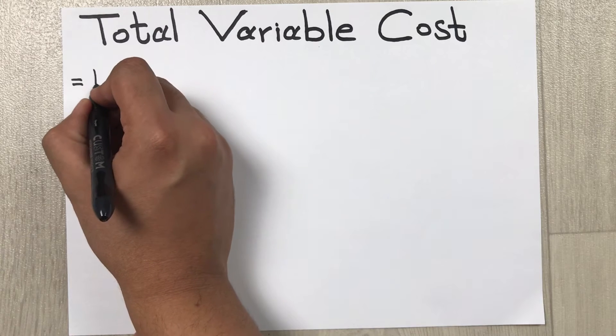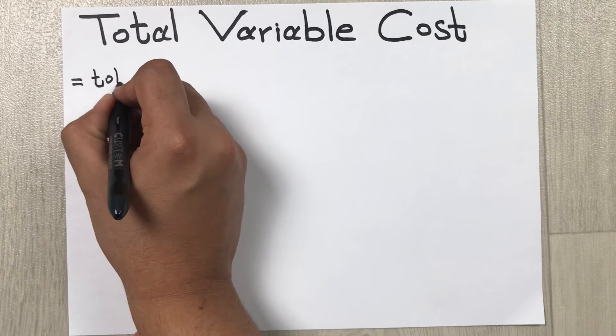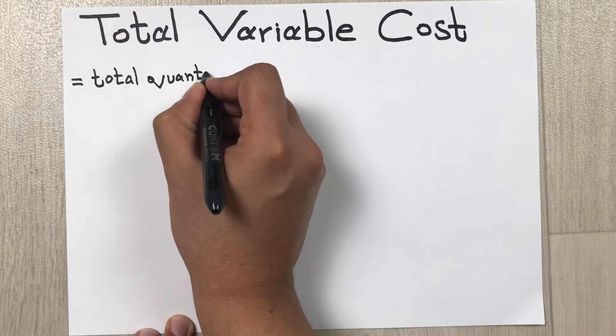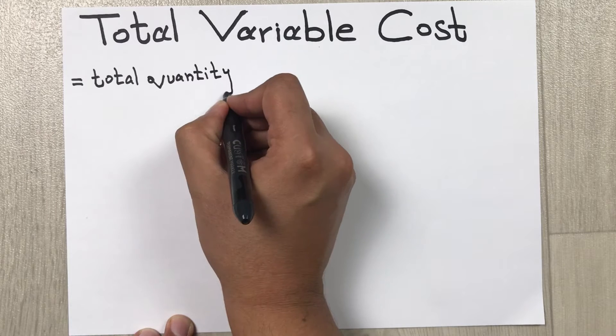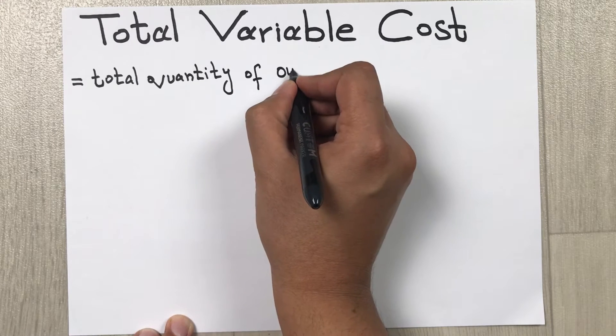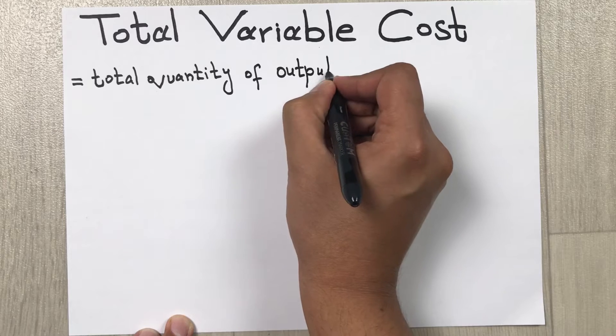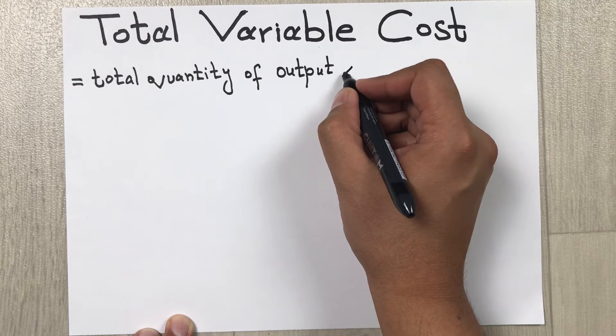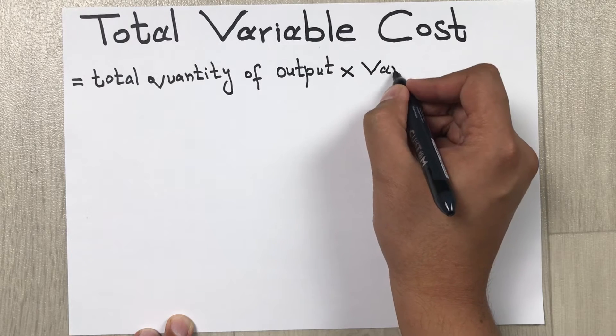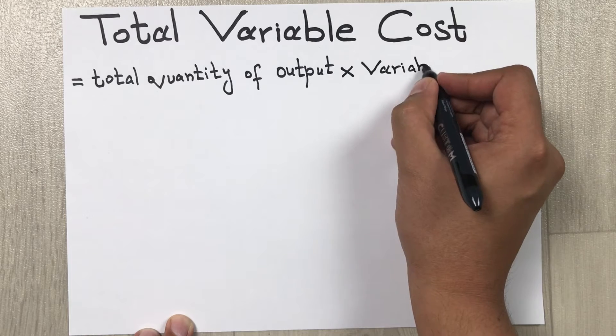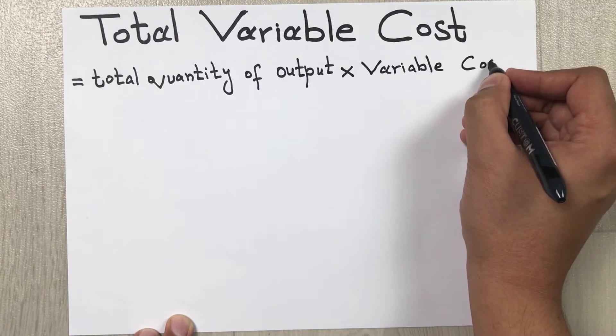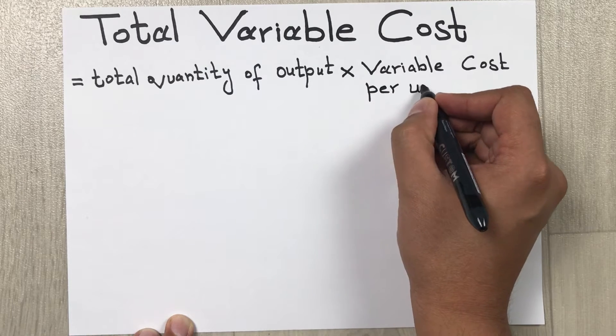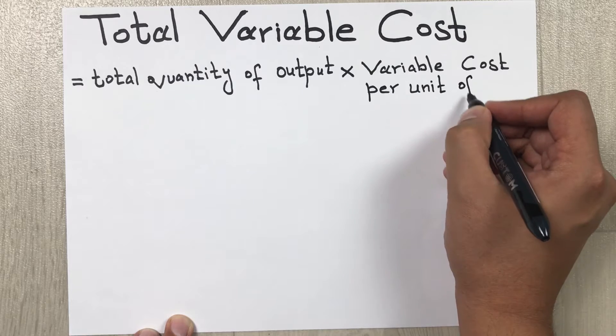quantity of output multiplied by variable cost per unit of output.